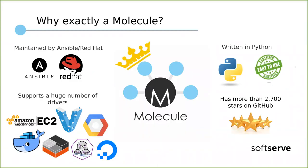Why choose Molecule specifically? Because it is maintained by the Ansible/Red Hat team and supports a huge number of drivers. It's written in Python, configuration has YAML format, and thus it's easy to start working with it. Of course, Molecule also has a lot of stars on GitHub. Essentially, Molecule is a tool that allows you to quickly deploy your test environment, apply your code to it, and in case of any errors, go to the test instance and see what the problem is.